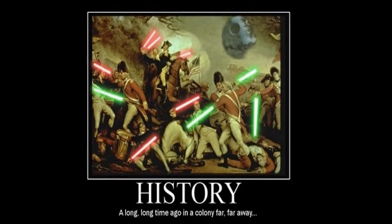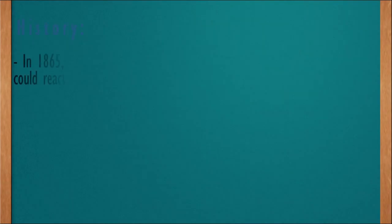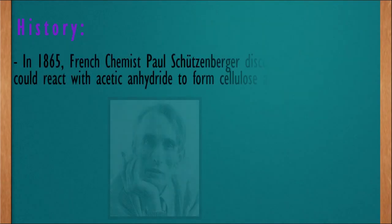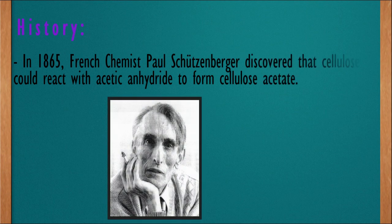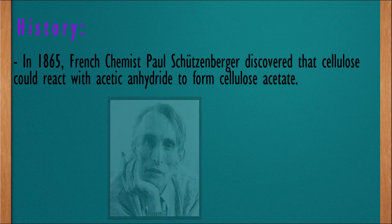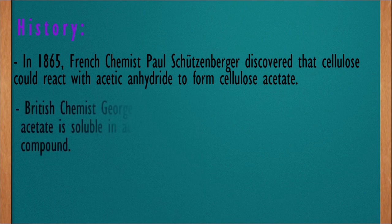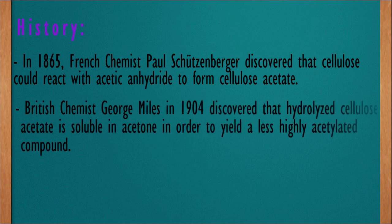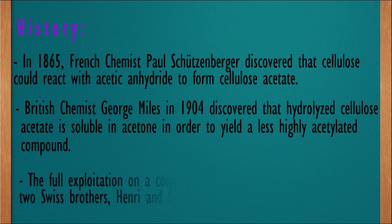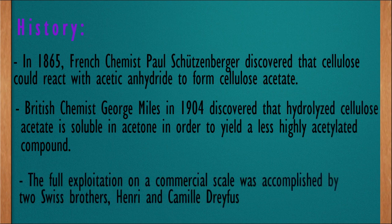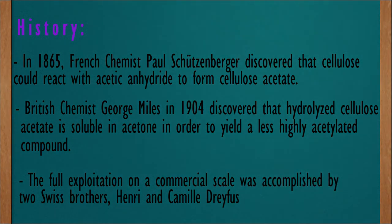Let's get a bit into the history of the product. In 1865, French chemist Paul Schusenberger discovered that cellulose could react with acetic anhydride to form cellulose acetate. British chemist George Miles in 1904 discovered that hydrolyzed cellulose acetate is soluble in acetone in order to yield a less highly acetylated compound. The full exploitation on commercial scale was accomplished by two Swiss brothers, Henri and Camille Dreyfus.